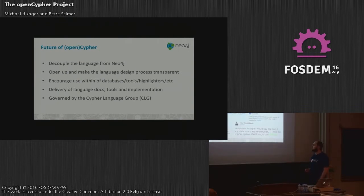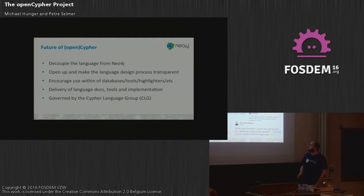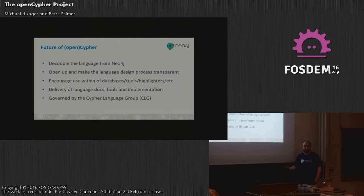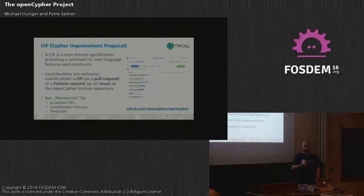Why do people love Cypher? Because it's pretty easy to write and easy to understand — some people say it reads like English. The idea behind OpenCypher is to decouple the language from Neo4j, pull the open source project into a separate OpenCypher project, open the language development process, make it more transparent and inclusive, and encourage creation of new tools like testers, generators, highlighters, and database implementations.